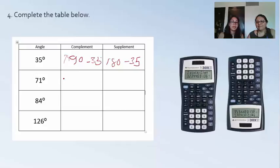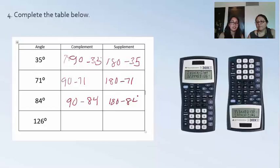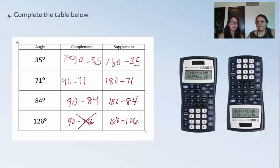For 71 degrees, the complement is 90 minus 71. For 84 degrees, the complement is 90 minus 84 and the supplement is 180 minus 84. For 126 degrees, since it's over 90 degrees, there is no complement. The supplement will be 180 minus 126. Plug those into your calculator to get the complementary and supplementary angles.